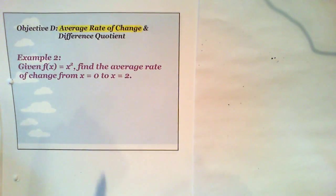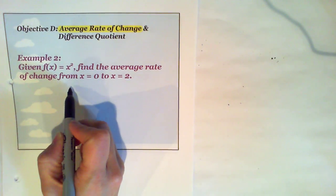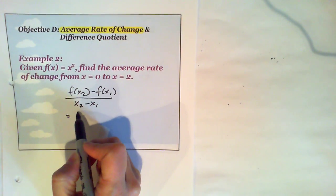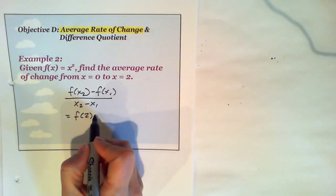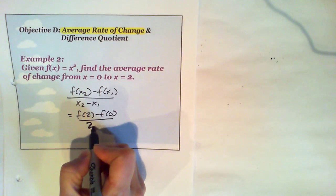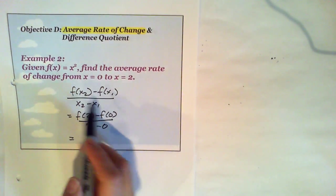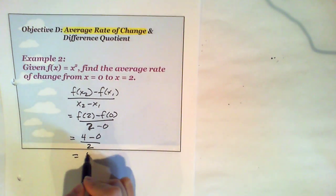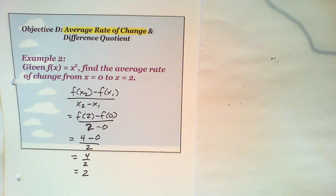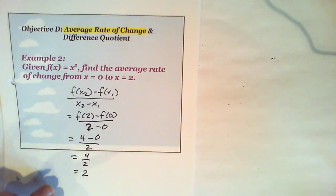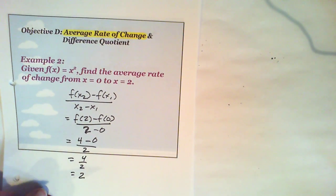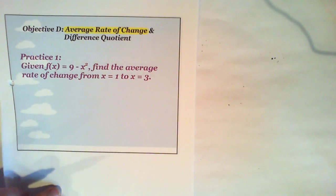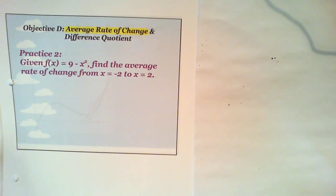Let's get cranking. Example 2: f(x) equals x squared. We find the average rate of change using f(x2) minus f(x1) over x2 minus x1. This time it's from 0 to 2. So f(2) minus f(0) over 2 minus 0. F(2) equals 4, f(0) equals 0, and 2 minus 0 is 2 — so 4 over 2 equals 2. The average rate of change is 2. There are a couple practice problems to try: 9 minus x squared from 1 to 3, and 9 minus x squared from negative 2 to 2.